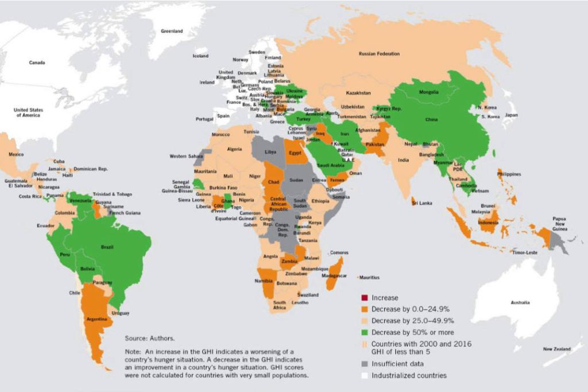The 2016 Global Hunger Index presents a multidimensional measure of national, regional, and global hunger, focusing on how the world can get to zero hunger by 2030. The developing world has made substantial progress in reducing hunger since 2000. The 2016 GHI shows that the level of hunger in developing countries as a group has fallen by 29%.